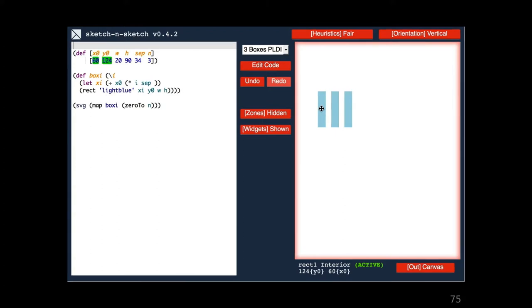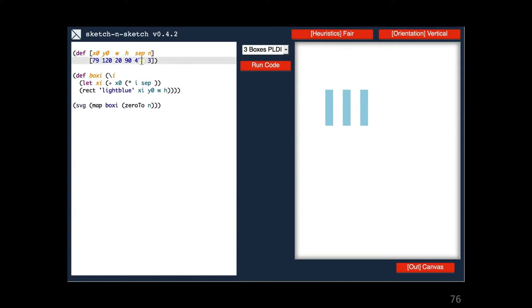We talked about how the heuristics automatically choose what will change. What if we don't like the choice? Say, for example, that we're happy with the separation and we don't want it to change anymore. We can mark any constant as frozen by adding an exclamation mark. This annotation instructs Sketch and Sketch not to change the value during direct manipulation. Now, dragging any box modifies x0. No box modifies sep.